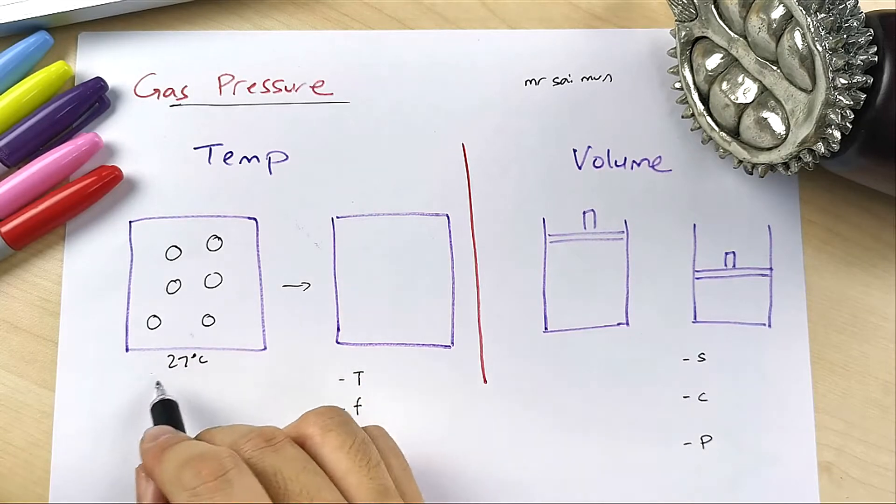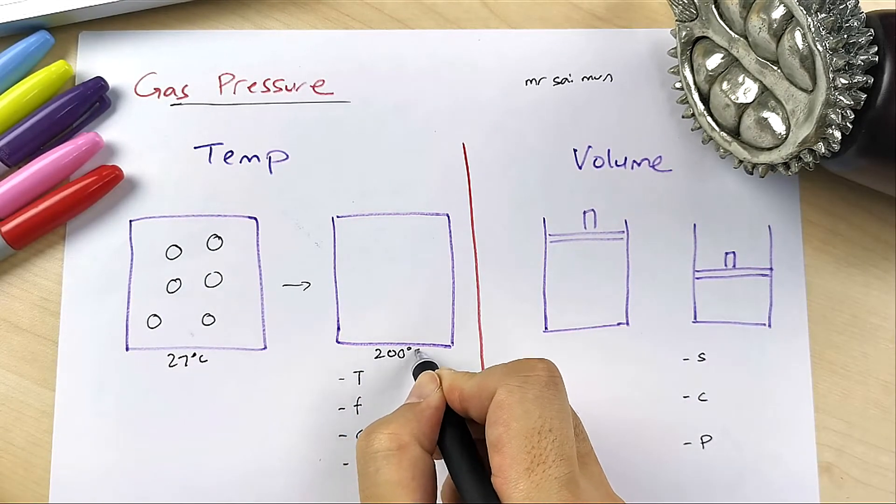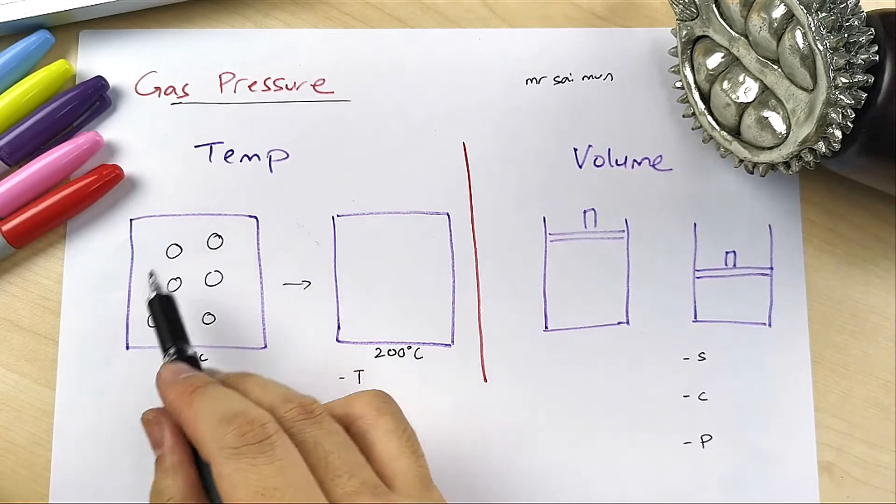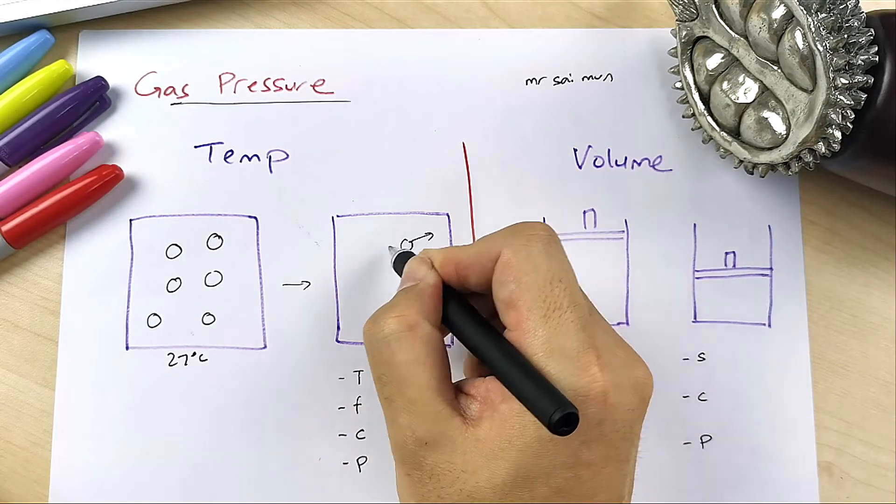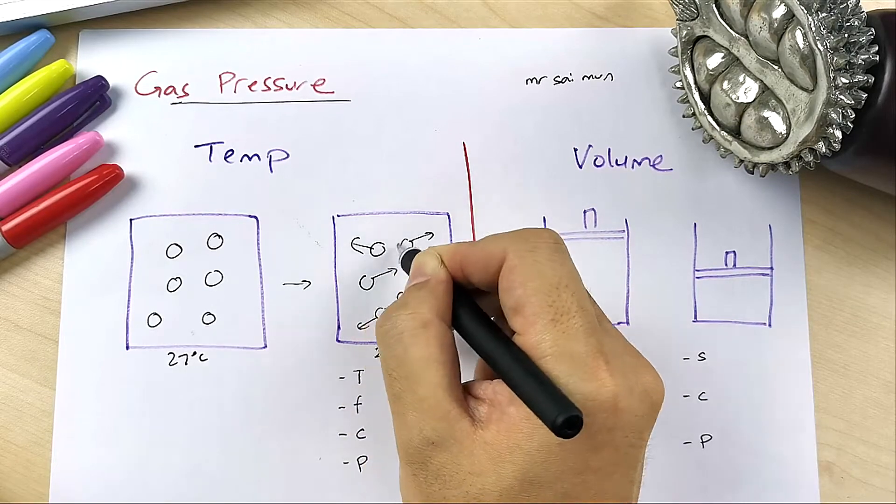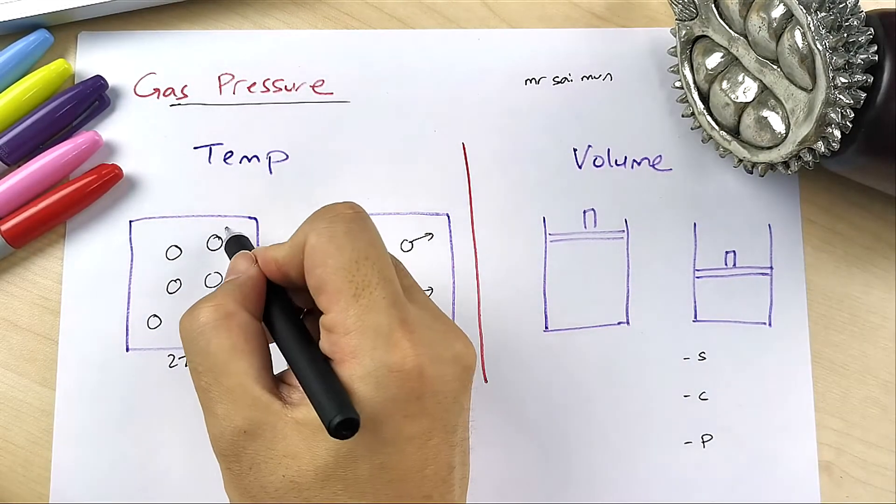If it increases to 200 degrees, this is super hot. What happens to these gas particles? They will move faster. Still one, two, three, four, five, six particles.